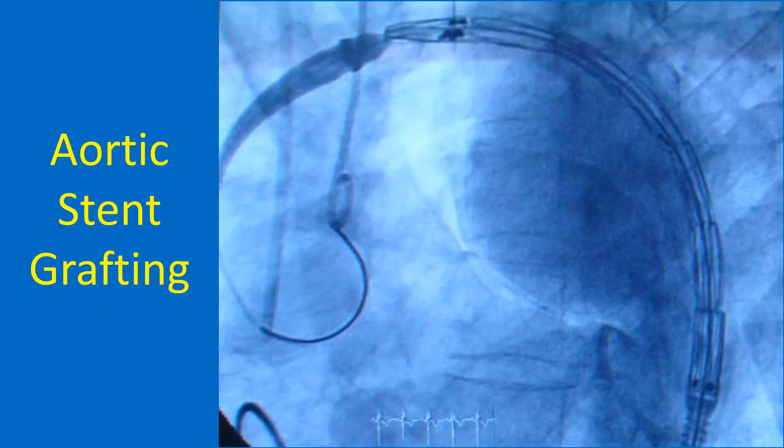This fluoroscopic image shows the aortic stent graft positioned in the arch and descending thoracic aorta, ready for deployment. The saccular aortic aneurysm is also visible in the background. While positioning the device, shortening during expansion should also be taken into consideration.